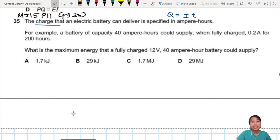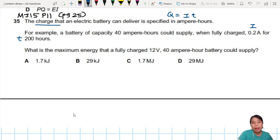This is just an example to show you - 40 ampere-hours fully charged, with current I and time t. If you multiply 0.2 times 200, that gives you 40. Then they ask: what is the maximum energy that a fully charged 12 volt, 40 ampere-hour battery can supply?